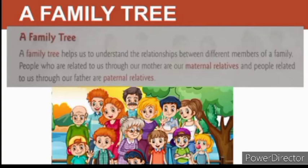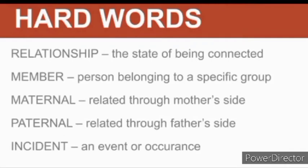There is a picture of a big family with so many people. Now we will see the hard words we have come across in the second paragraph of the lesson. Number one: Relationship — R-E-L-A-T-I-O-N-S-H-I-P — means the state of being connected. Member — a person belonging to a specific or particular group. Maternal — related through mother's side. Paternal — related through father's side. Fifth one: Incident — an event or occurrence — this word was given in the first paragraph.